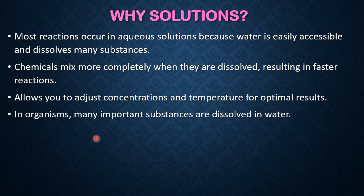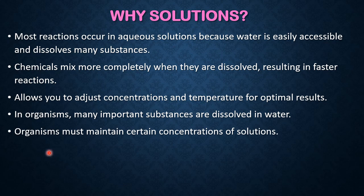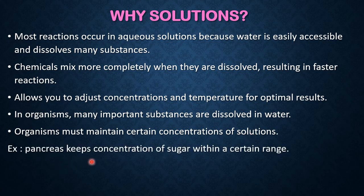In organisms, many important substances are dissolved in water, and organisms must maintain certain concentrations of solutions. For example, the pancreas keeps the concentration of sugar within a certain range. Our human body is a natural laboratory — many reactions take place involving maintenance of pH, formation of urine, and maintenance of sugar level. Every moment, our body maintains the sugar level, and a slight variation tells us the body is not functioning properly, requiring us to consult a doctor.